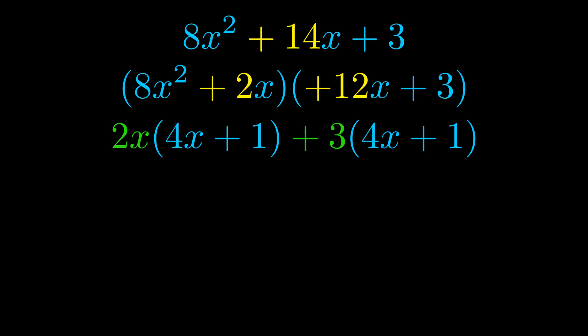Notice also how what remains inside of the parentheses is the same in both cases. The blue values are the same. Those blue values will become one of our factors and we will combine the two green values the GCFs that we pulled out to get the other one. And that is our fully factored equation.